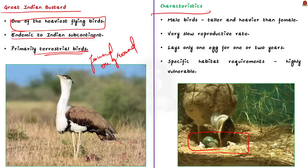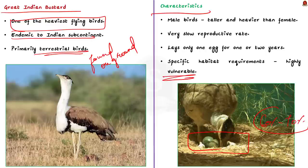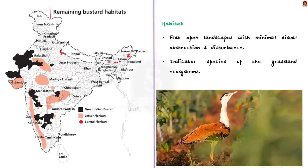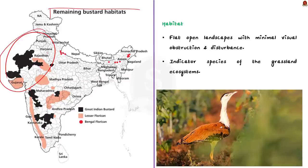The male bird is taller and heavier than the female. The GIB is known for its very slow reproductive rate — it lays only one egg for one to two years, with a success rate of around 60-70%. Because of this slow reproductive rate and specific habitat requirements, the species is highly vulnerable. Historically, the Great Indian Bustard was distributed throughout Western India and parts of Pakistan. GIBs once had a stronghold over the Thar Desert and the Deccan Plateau, but today their population is confined mostly to Rajasthan and Gujarat, with small populations also found in Maharashtra, Andhra Pradesh and Karnataka.